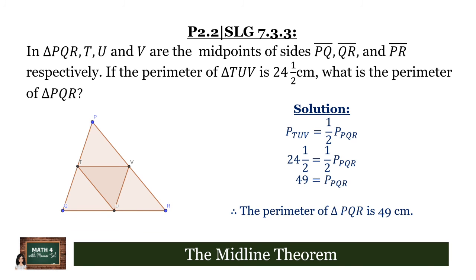Therefore, if the perimeter of triangle TUV is 24½, it's equal to one-half of the perimeter of triangle PQR, and that gives us 49. So the perimeter of triangle PQR is therefore 49 centimeters.